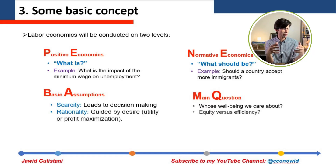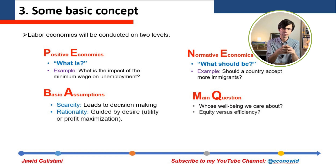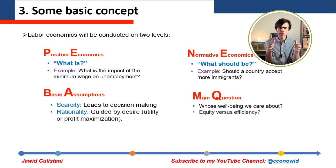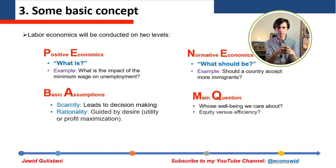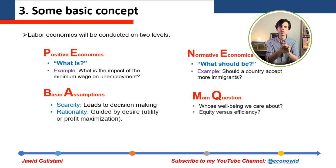Labor economics research is conducted on two levels: positive economics and normative economics, or a combination of both. Positive economics is the narrower branch — it answers questions about what the reality in the market is. It describes what is already observed in the real world, with no value judgment. You cannot say it should or should not be a certain way; it is based on available data and established models.